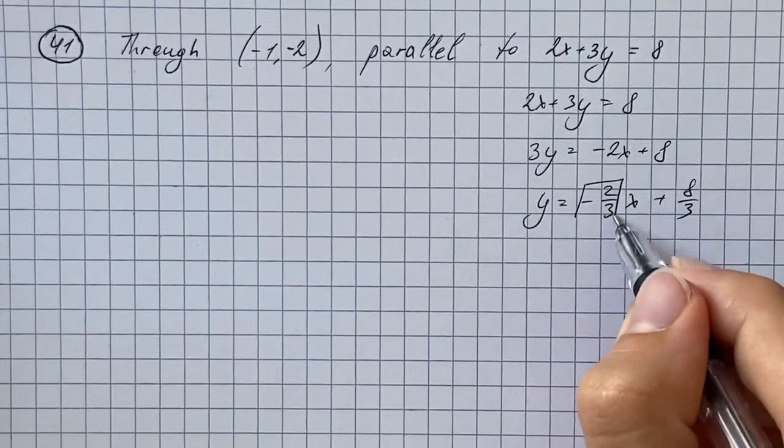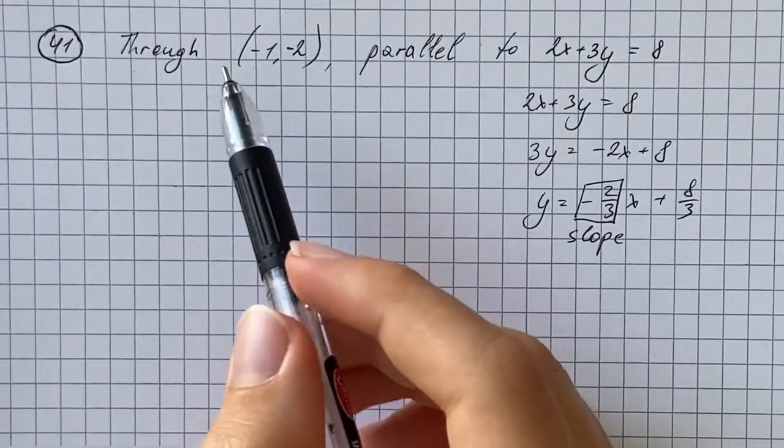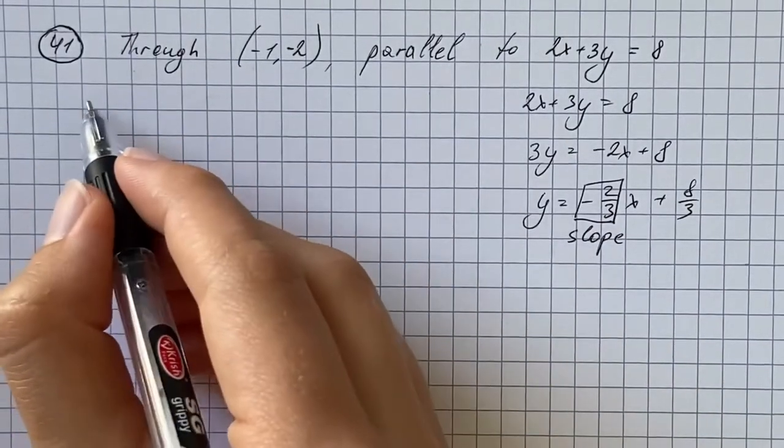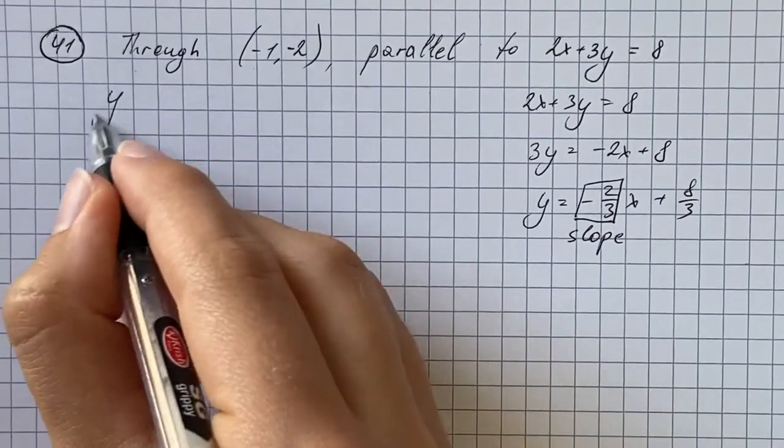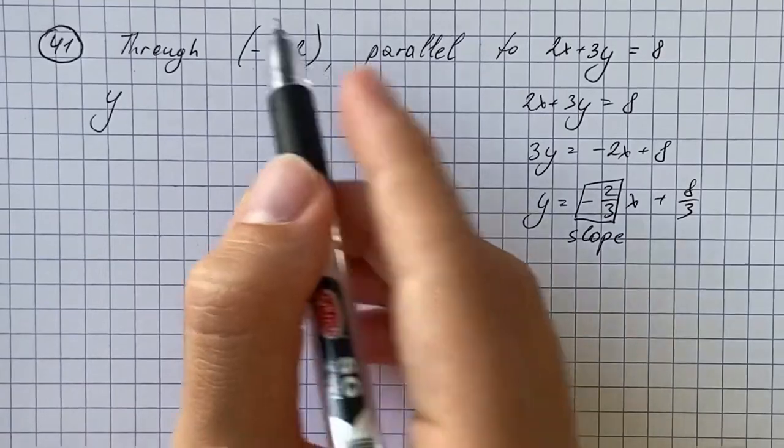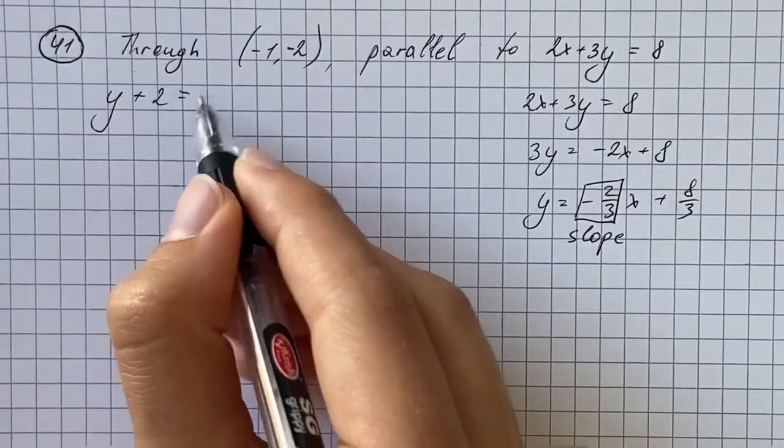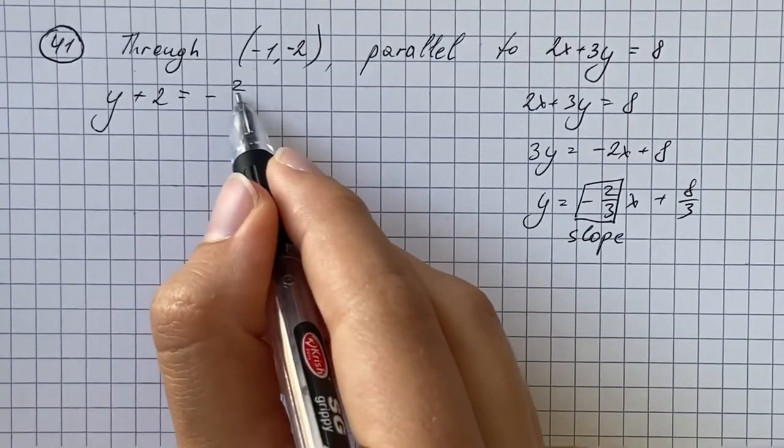So here is our slope. Now to find the equation we're going to use point-slope formula, which says that y minus the y coordinate, which is negative 2, so that's minus negative 2 or just plus 2, equals the slope which is negative 2/3.